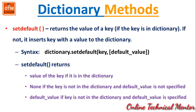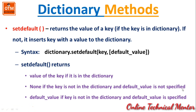Next, setdefault() returns the value of a key if the key is in the dictionary. If not, it inserts the key with a default value. The syntax is: dict.setdefault(key, default_value) where default_value is optional. It returns the value if the key exists, None if the key is not found and no default is specified, or the default value if the key is not found and a default is provided.